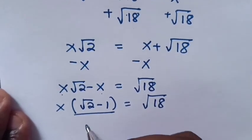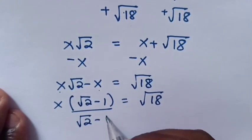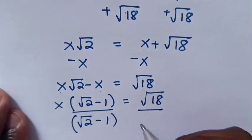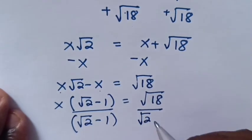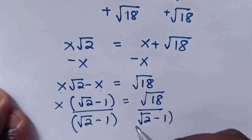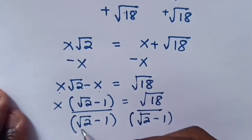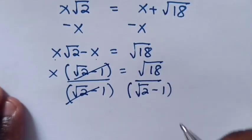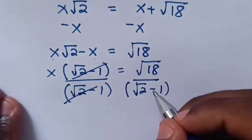We divide by (square root of 2 minus 1) on both sides. Square root of 2 minus 1 — this will cancel.